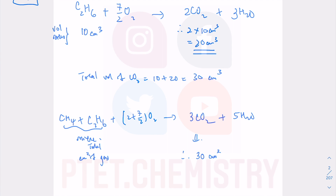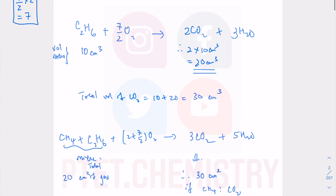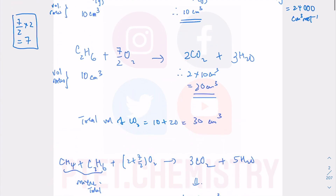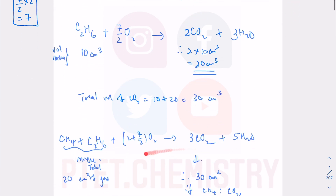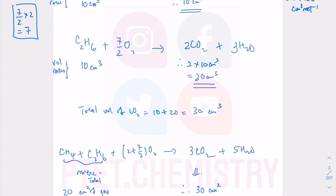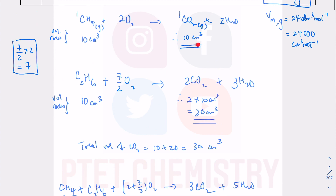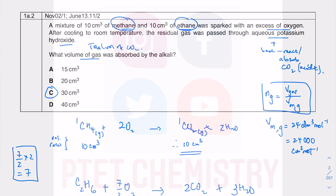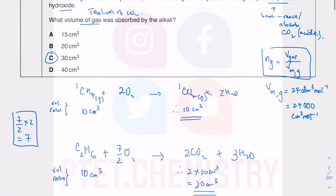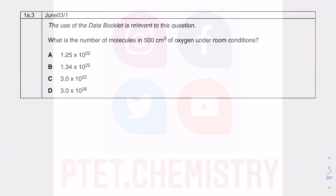That combined method is slightly less clear — after balancing you still need to add the equations again, which takes time. Working individually is more direct and obvious; you just sum them up. The answer is 30 cm³, since all 30 cm³ of CO₂ is absorbed by the potassium hydroxide. That ends the second question.